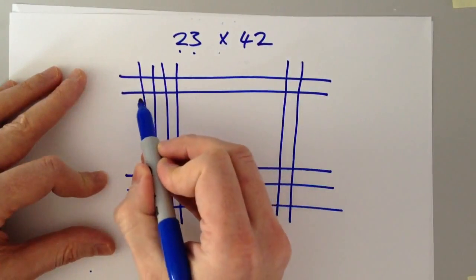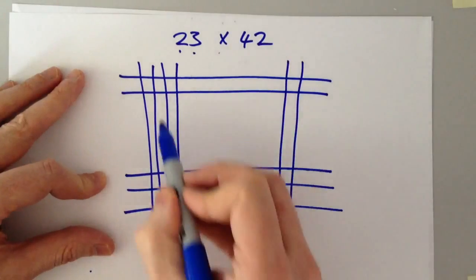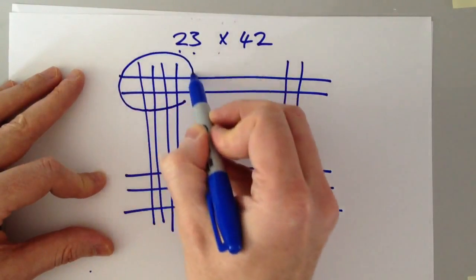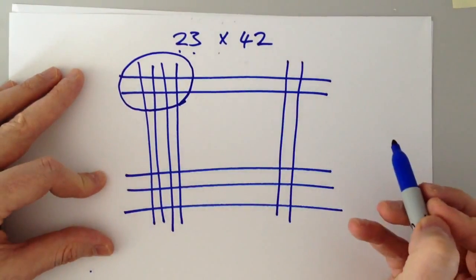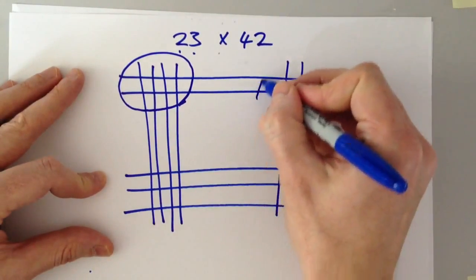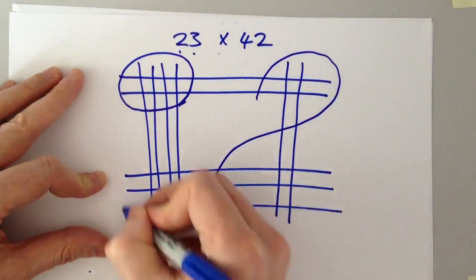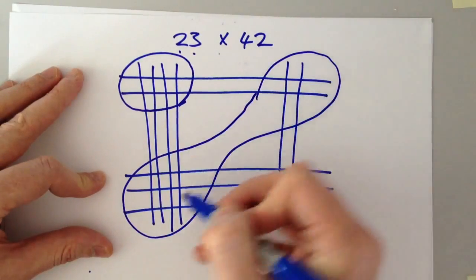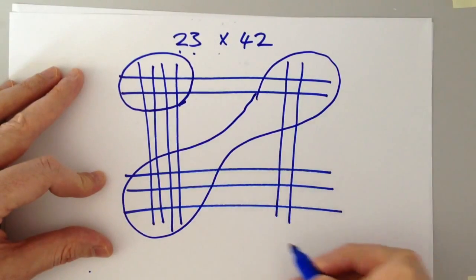Then we group these intersection points. First the top left corner. Then we group diagonally around each of the intersect points. And finally in the bottom right corner.